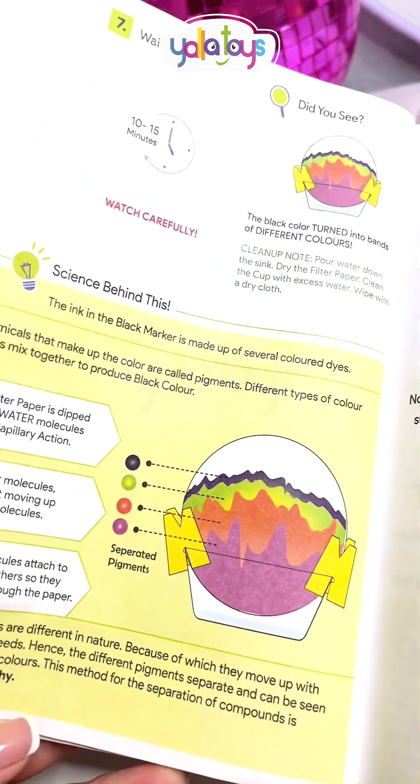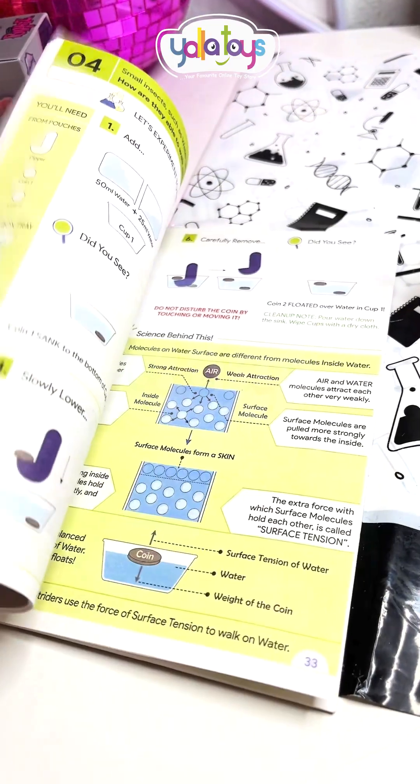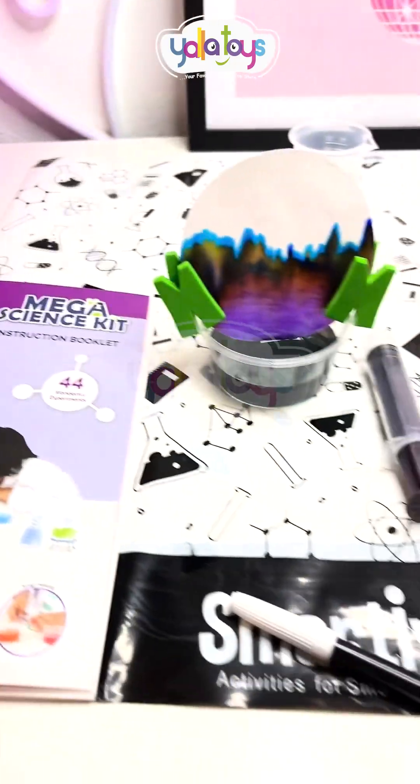You can see how it says the ink in the black marker is made up of several colored dyes, which is why this happened. And there's a lot more experiments to do, so let me know if you guys want to see more.